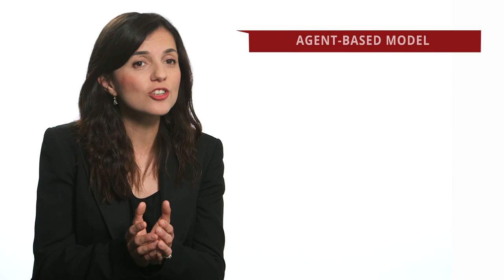A third approach, which we took in this paper, is to use an agent-based model — basically creating an artificial world where you can control a lot of things and see how changing the social ties between people changes their behavior and changes the aggregate outcome at the system level.